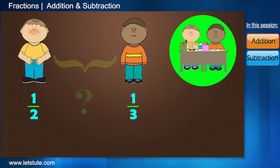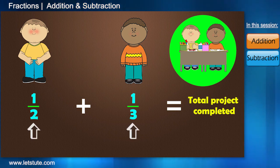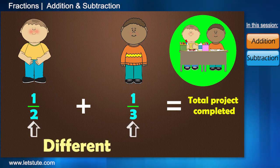Now, here, we need to add 1 by 2 and 1 by 3 which will give us the total amount of project completed. Now, since the denominators are not same, can we directly add them?